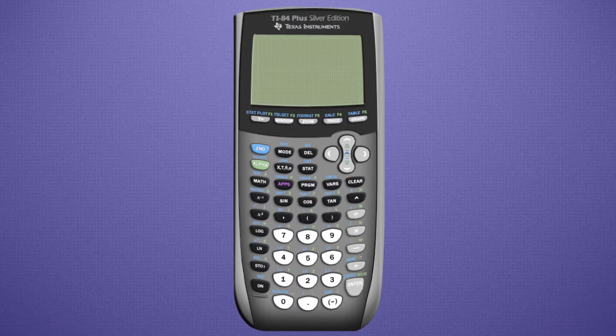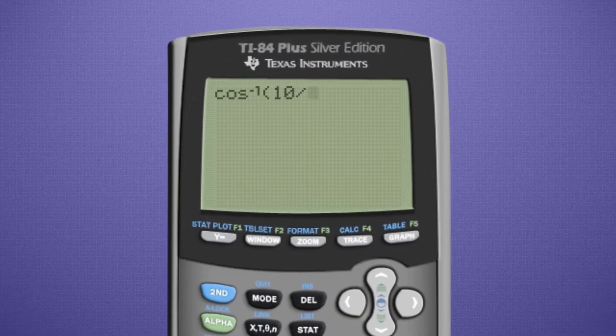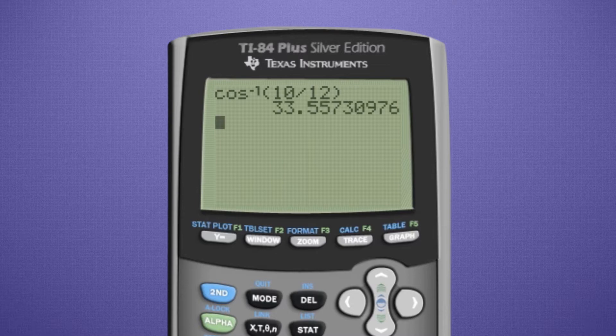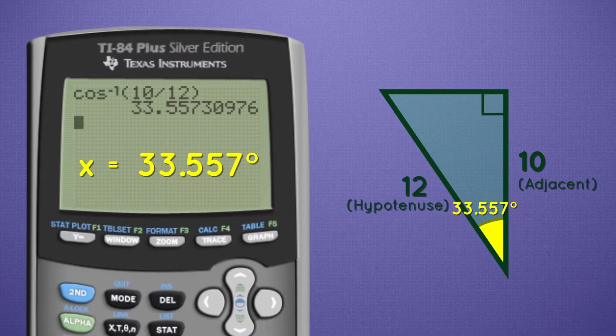On our calculator, we first hit the second button, then cosine to bring up the inverse cosine. Then enter our lengths, 10 over 12. And that's it. Our angle measures 33.557 degrees.